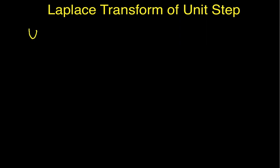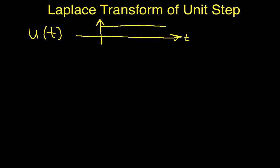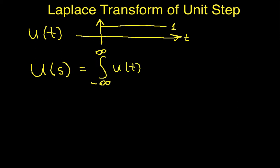The unit step function looks something like this. It has a value of 1 for values of t greater than 0 and a value of 0 for values of t less than 0. To compute the Laplace transform of the unit step function, which we'll call capital U of S, by the definition of the Laplace transform, it's the integral from minus infinity to infinity of U of t times e to the minus st dt.